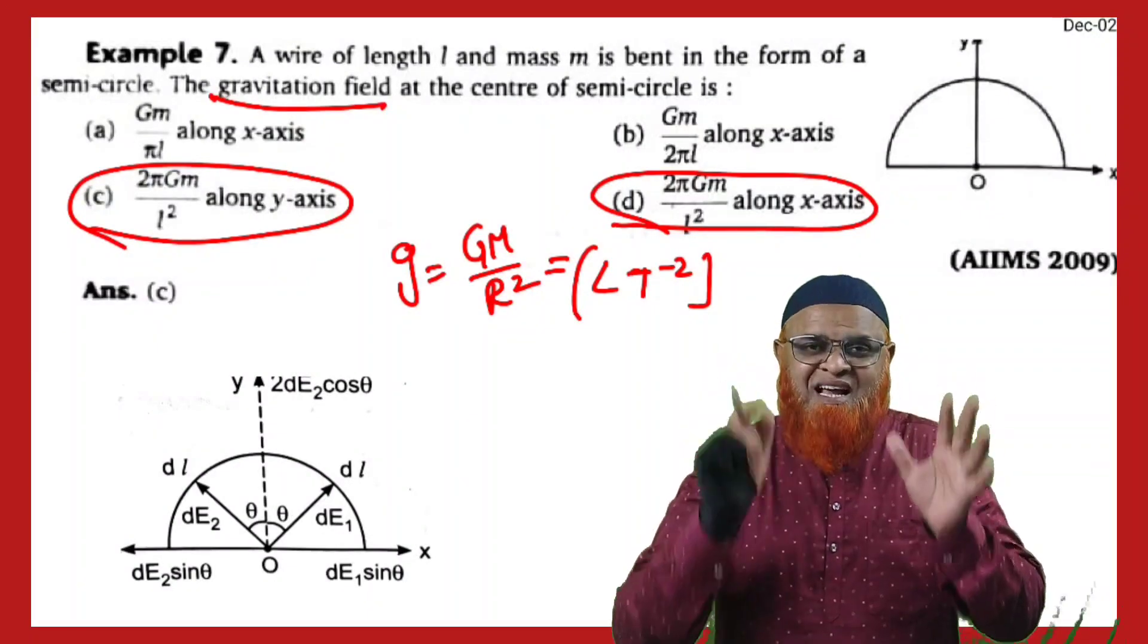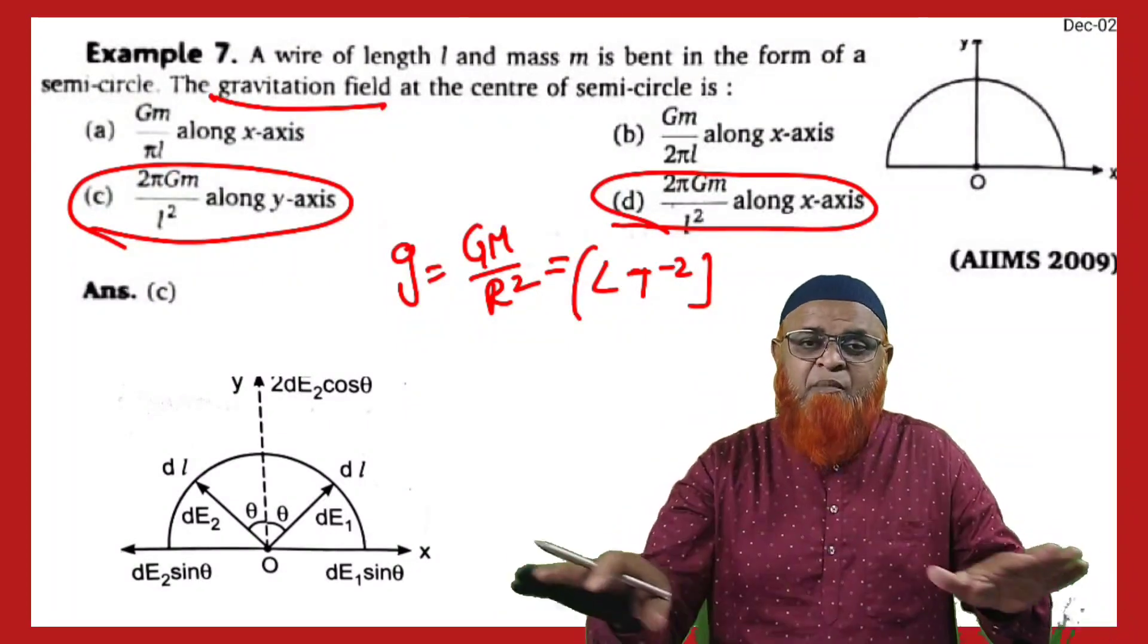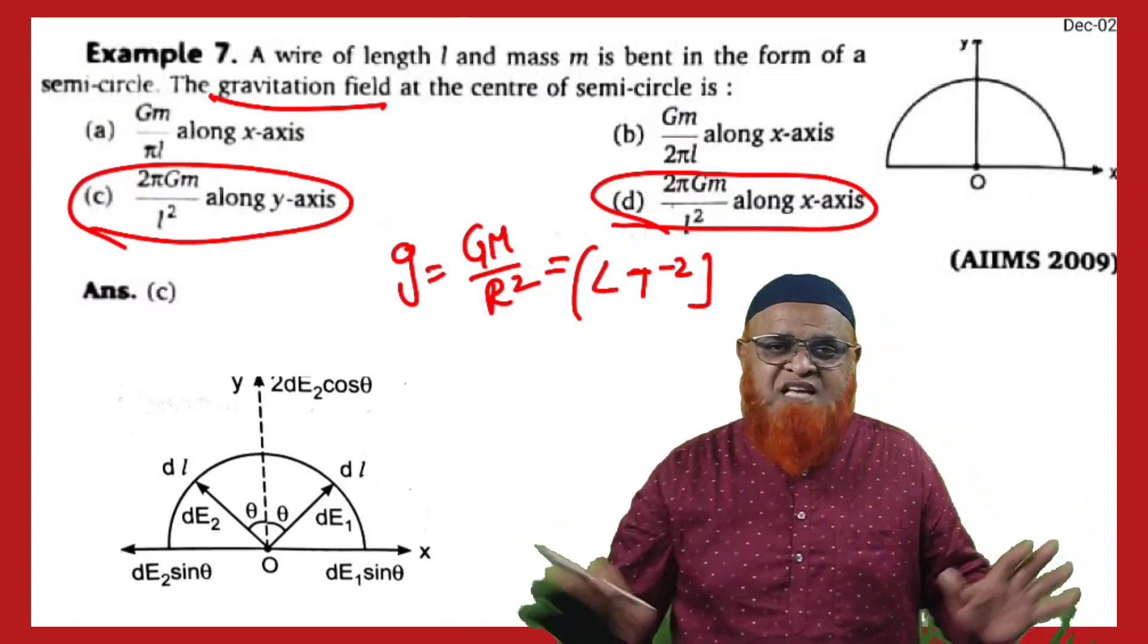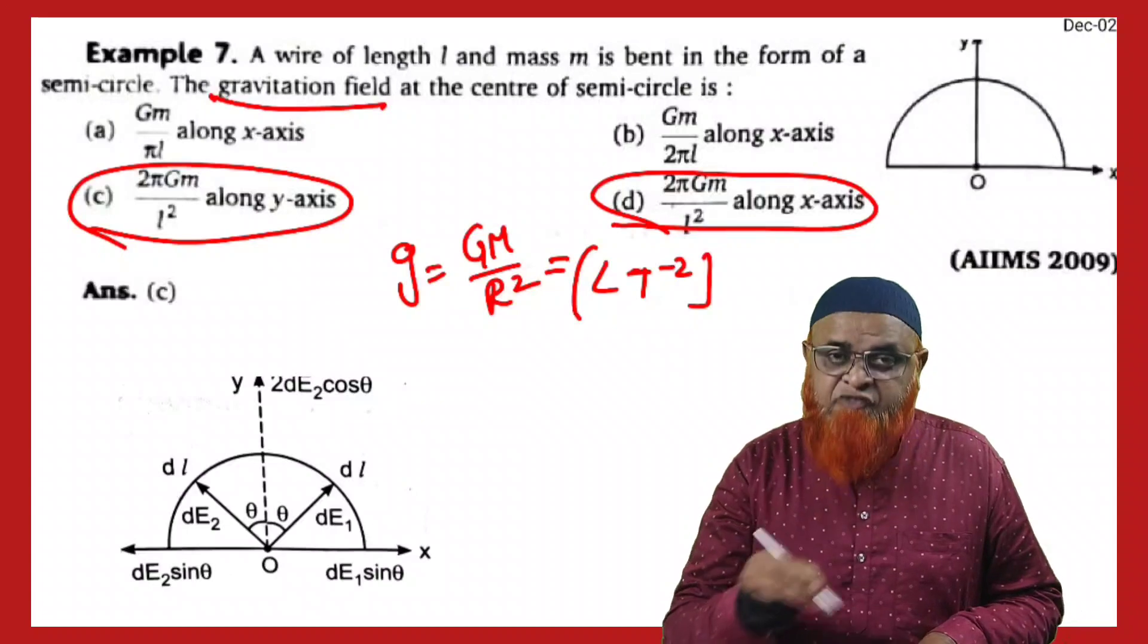Among these two options, which is the correct option? You have to select between C and D. Options A and B have been eliminated. You have to select between C and D.